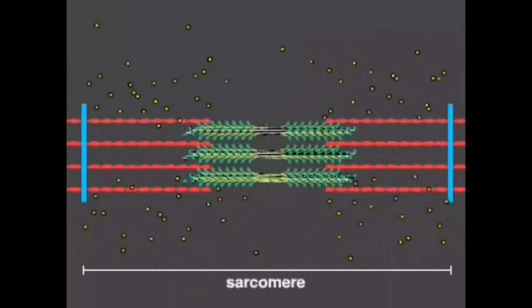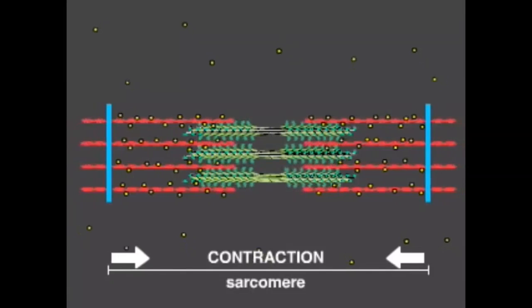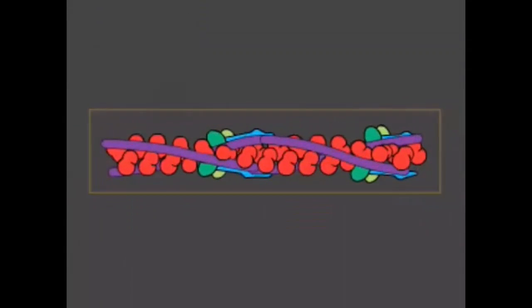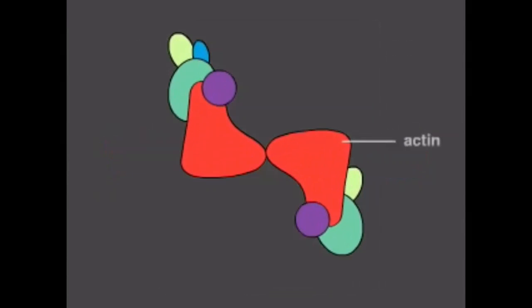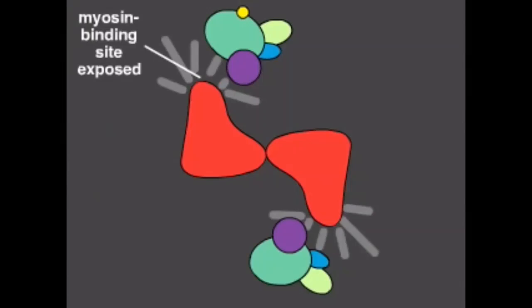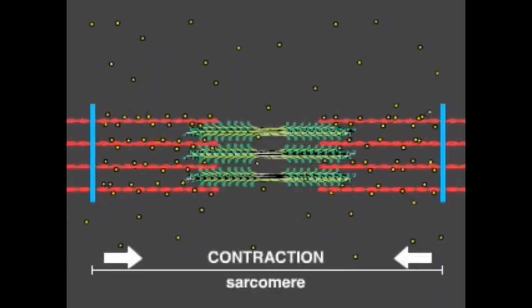Within a contractile bundle of a muscle cell called a myofibril, calcium interacts with protein filaments to trigger contraction. Each contracting unit, or sarcomere, contains thin actin and thick myosin filaments that cannot interact in the absence of calcium, because myosin binding sites on the actin filaments are covered by a rod-shaped protein called tropomyosin. A calcium-sensitive complex called troponin is attached to the end of each tropomyosin molecule. When calcium floods the cell, troponin binds to it, moving tropomyosin off the myosin binding sites, allowing the myosin motors to crawl along the actin, resulting in a contraction of the muscle fiber.